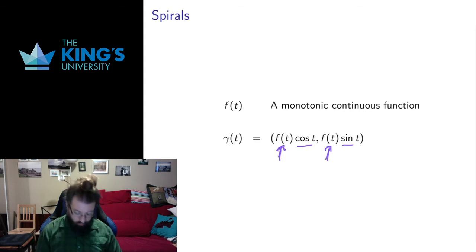This thing that shows up in front of the sine and the cosine, that's the radius of the circle. If I have gamma equals 7 cos t, 7 sin t, that's the circle of radius 7. Here, this is a circle of variable radius, the radius is changing. I want it to be either increasing or decreasing. If the radius is increasing, I'm going to get a circle-like shape that just keeps increasing in radius, I'm going to go outward.